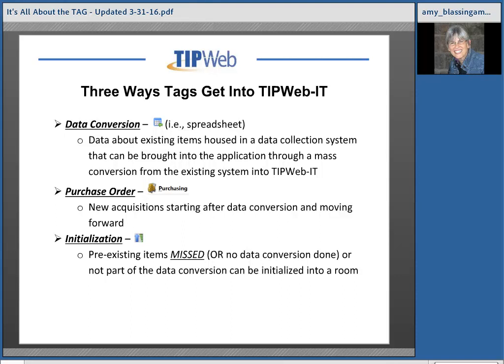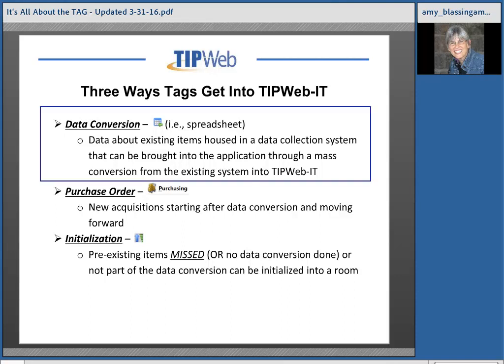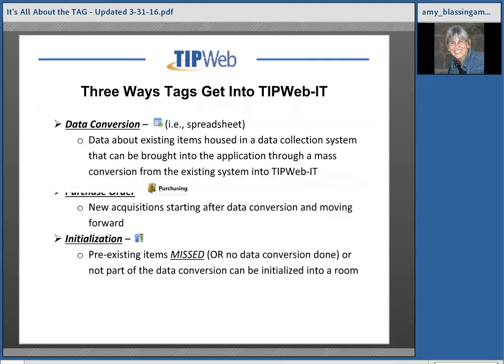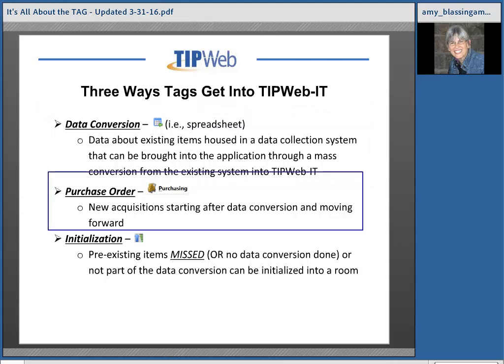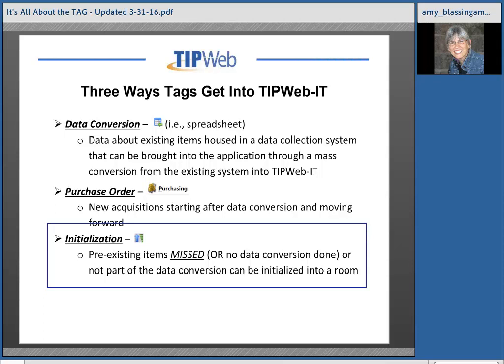Next concept: there are three ways tags get into TIP Web IT. The first way is through data conversion. Data conversion consists of previously existing tags within your district — those tags along with data associated to them are organized into a spreadsheet, and then that data is uploaded into TIP Web IT. The second way we get tags into the application is through what we call purchase orders. Once you purchase the application, any new acquisitions or new tags that you want to track need to be brought in through a purchase order.